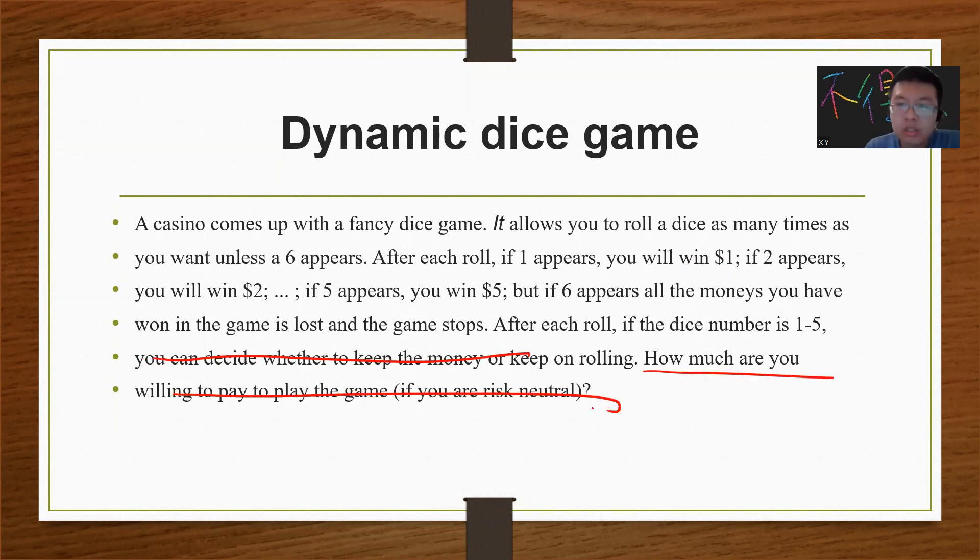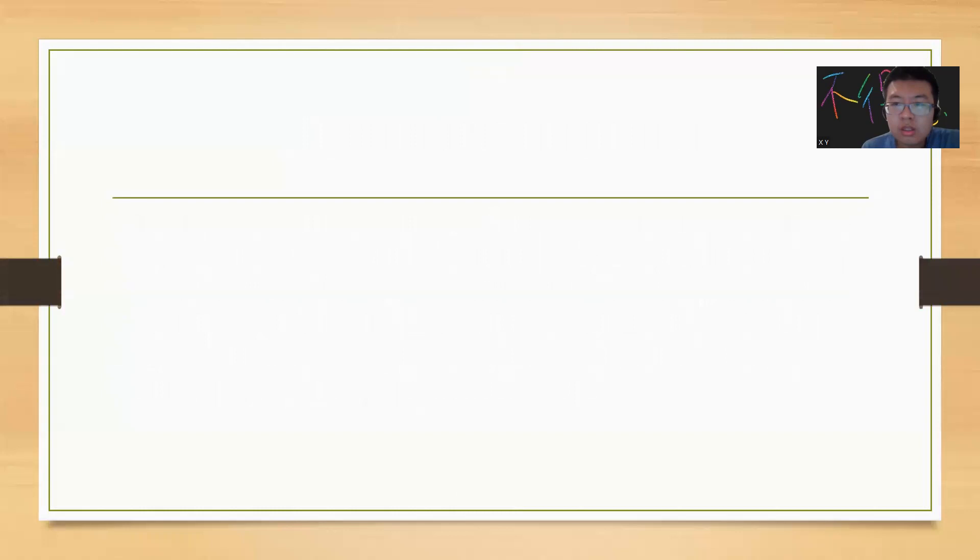The idea is that you want to find the expectation value of playing this game - the expected money that you can get. This is hard to find because you get 1, 2, 3, 4, or 5, but if you get 6 then you lose everything. You need some terminal condition where you will not throw anymore.